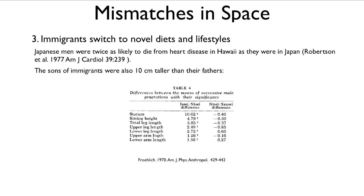The other thing that happened to Japanese immigrants is that their sons were about 10 centimeters taller. The Issei generation is the first generation — Ichi-ni-san-shi, that's one, two, three, four in Japanese — so Issei is first generation, Nisei is second generation. The difference is about 10 centimeters in height. So basically the sons of Japanese immigrants were much better adapted to basketball teams than were their fathers.